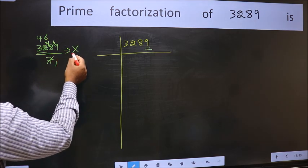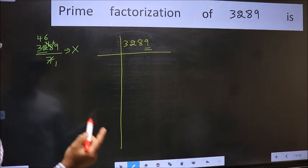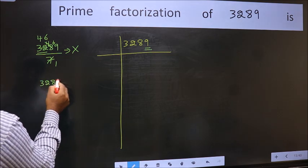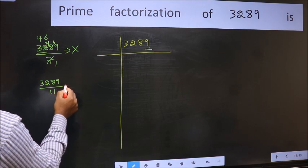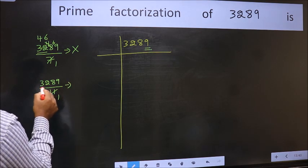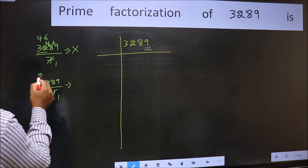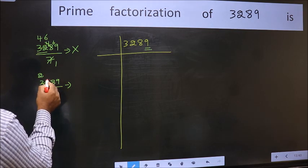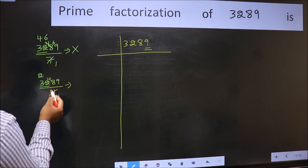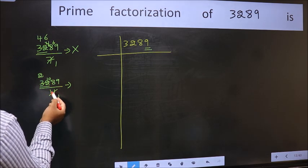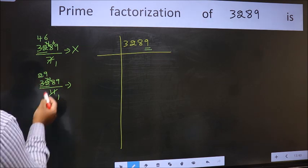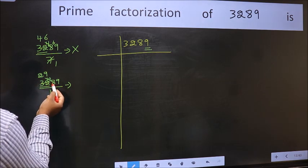Next prime number 11. A number close to 32 in the 11 table is 11 times 2, 22. 32 minus 22 is 10, carried forward 108. A number close to 108 in the 11 table is 11 times 9, 99. 108 minus 99 is 9, carried forward 99.